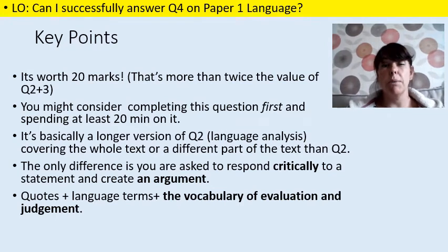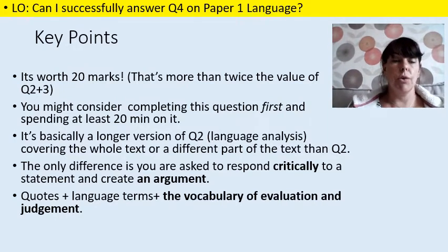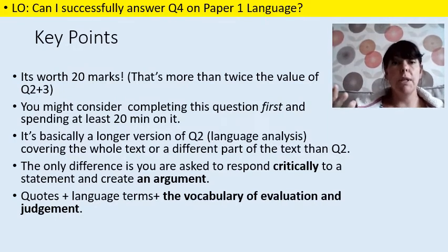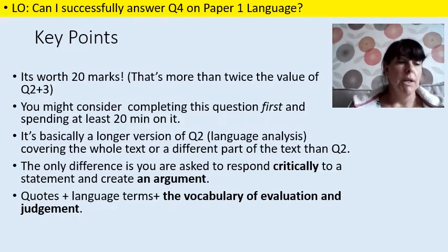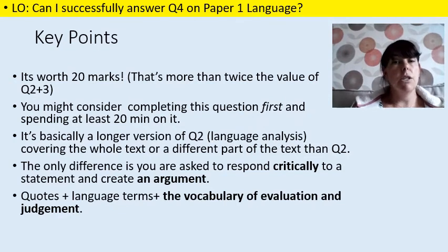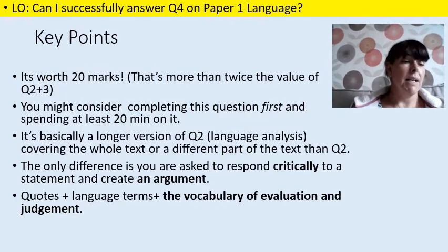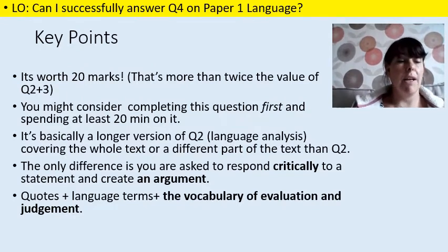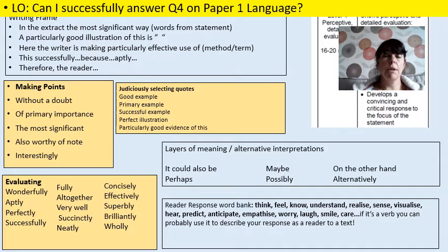If you do question 4 first, you've had a look at the whole text pretty much — it asks you to look at the second half, but you've had to look at the whole text to judge your answer. Then perhaps answering questions 2 and 3 is slightly easier and you might even be faster because you've done much of the thinking already. It's basically a longer version of question 2, the language analysis, covering a different part of the text. The only difference is that you're asked to respond critically to the statement and create an argument — so you're looking for quotes, language terms and the vocabulary of evaluation and judgment.